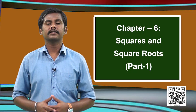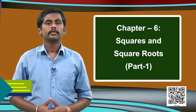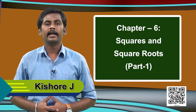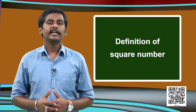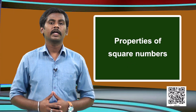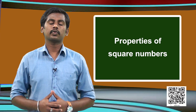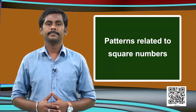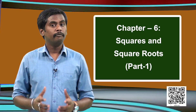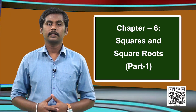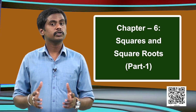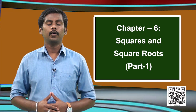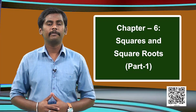Thus we found various patterns related to square numbers, and here we end the class. We started with the definition of square numbers, then moved on to properties of square numbers, and also learnt various patterns related to them. We will answer how to find the square of a given number in our next class. Hope you enjoyed the class. Have a good day. Thank you.